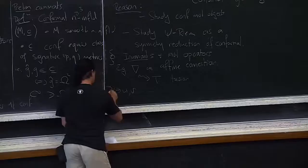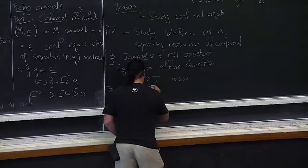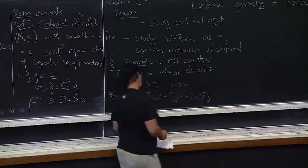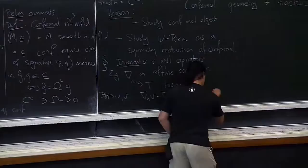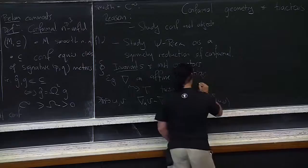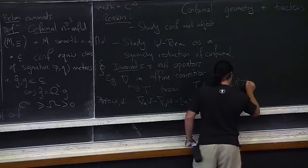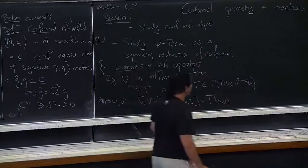Suppose you have a manifold and you have a smooth affine connection. One thing you can do is calculate its torsion: given a couple of smooth vector fields on your manifold, the torsion is calculated by taking the derivative of v in the direction of u minus the derivative of u in the direction of v, minus the Lie bracket of those two. This looks like some sort of differential operator, but as you all know, this is actually a tensor.